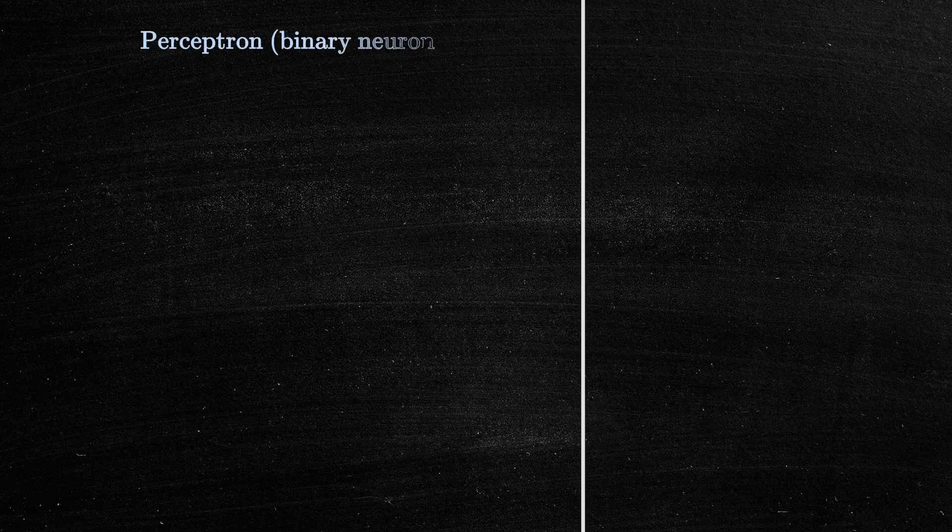Now, let's take a closer look at how a perceptron neuron works. Comparing it to a human, a perceptron is similar to a person with dichotomous thinking.